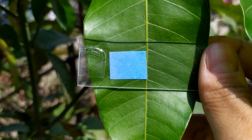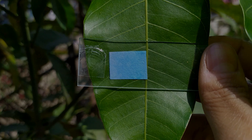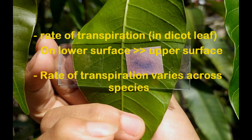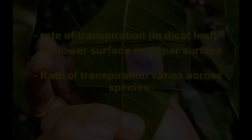You may repeat the experiment using leaves of different species of plants under different conditions of temperature and humidity, and make a record of the amount of time it takes for the color change to take place on both surfaces of the different species of leaves. From this experiment, we can make a generalized conclusion that transpiration occurs at a much faster rate on the lower surface of dicot leaves compared to the upper surface. The rate of transpiration also tends to vary across species and among dicots and monocots.